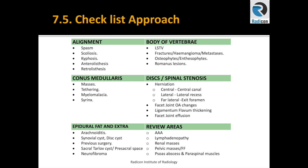Then finally D for discs: we have herniation, centrally, laterally, or far laterally, facet joint osteoarthritis, and ligamentum flavum thickening resulting in impingement on the central canal or narrowing of the lateral recess or exit foramina.